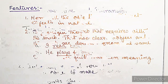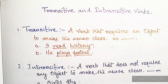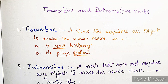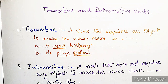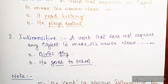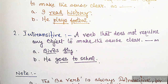A transitive verb is a verb that requires an object to make the sense clear. For example, 'I read history' and 'He plays football.' In these sentences the action starts with the subject and ends in the object. An intransitive verb does not require any object to make the sense clear — for example, 'Birds fly' and 'He goes to school.'